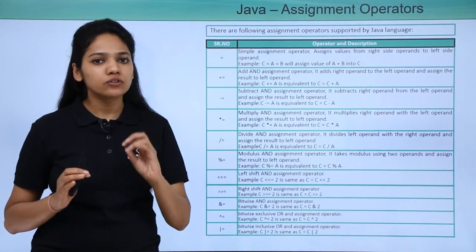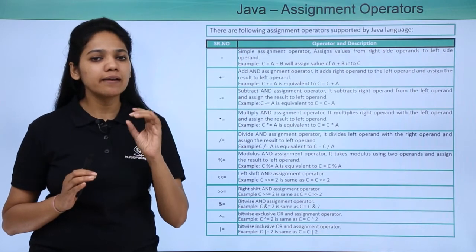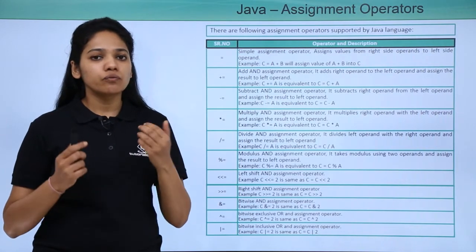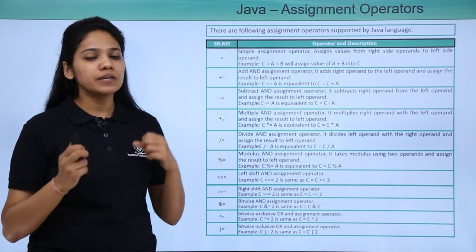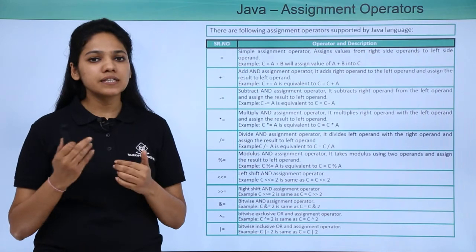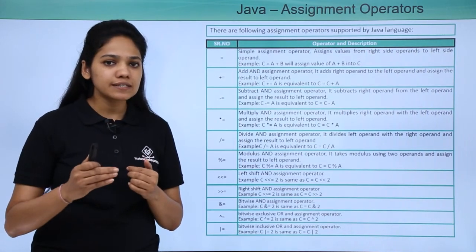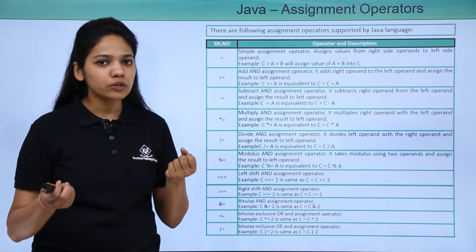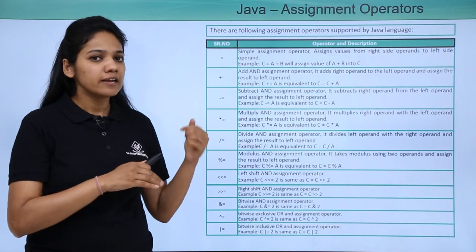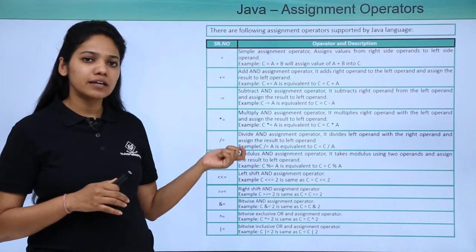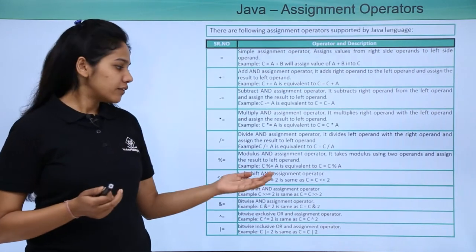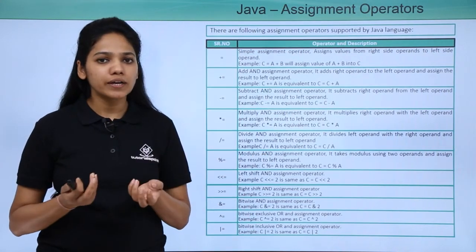For example, here we consider three variables or three operands: A, B, and C, and we write an equation as C is equal to A plus B. So we need to see whether the value of A plus B is equal to C or not. In case of plus equal to, what it does is that it adds the left operand with the right operand and the resulting value will be stored on your left operand. Similarly, few other operators are done: minus equal to, multiplication equal to, modulus equal to, divide equal to, and the last four use bitwise operators.